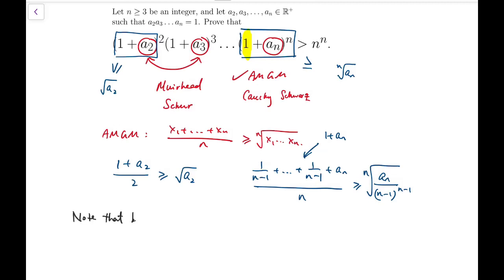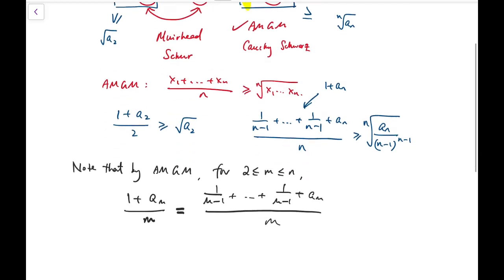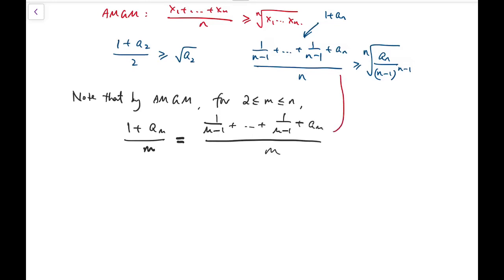Let's write out the whole solution. Note that by AM-GM, we can say that for numbers between 2 and n, I'm going to deal with aₘ. So (1+aₘ)/m, and I'm going to split it into m-1 copies of 1/(m-1). This is actually just imitating this form, but replacing n by m, because n is actually a fixed number.